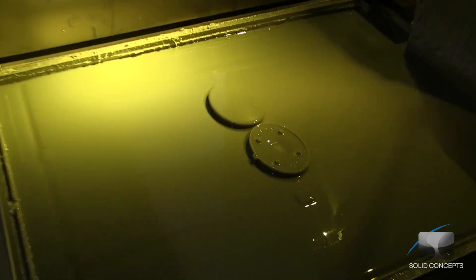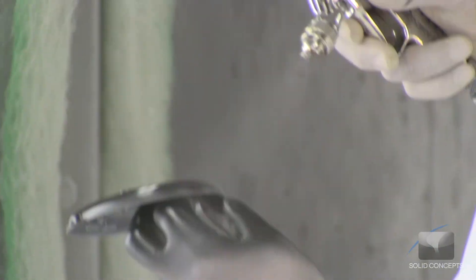The first step in this advanced cast urethane process is to create a master pattern which is used to create the silicone mold. The master pattern is typically fabricated with polyjet, stereolithography or CNC technologies.